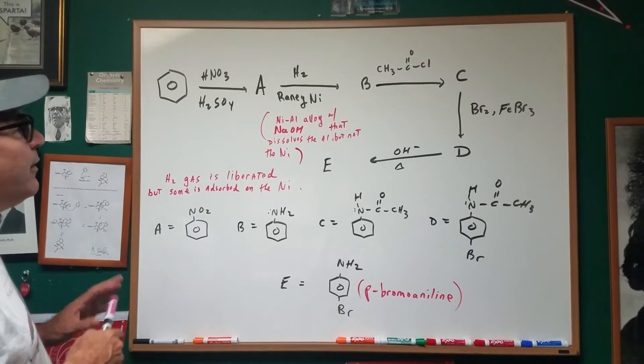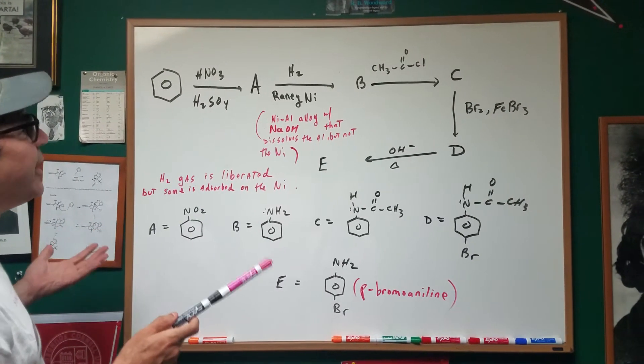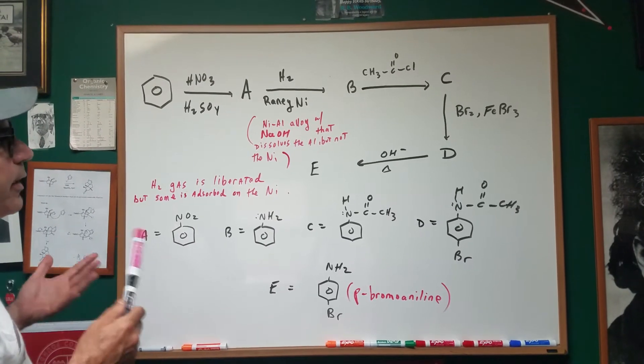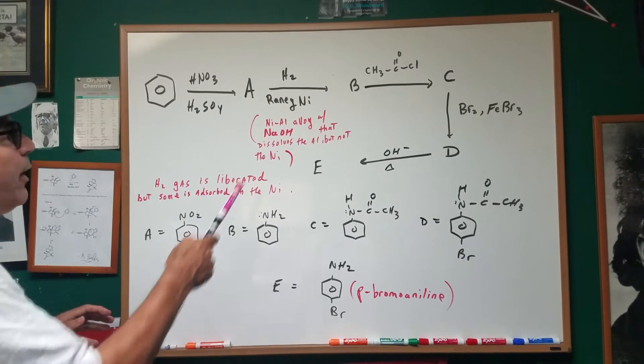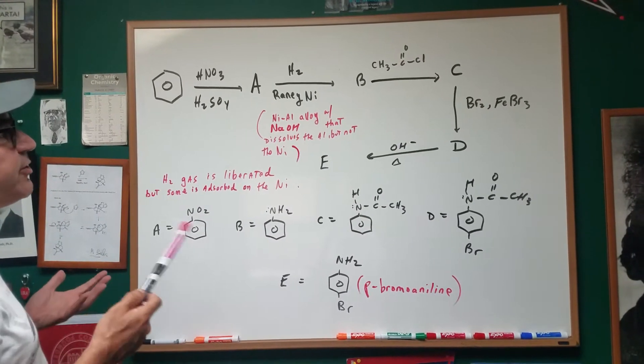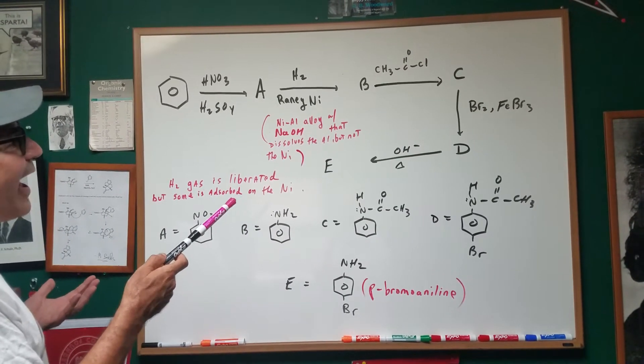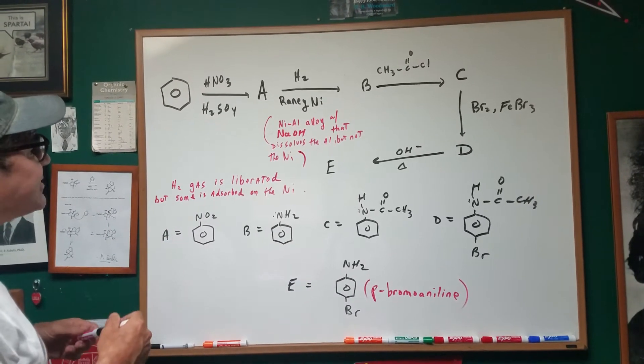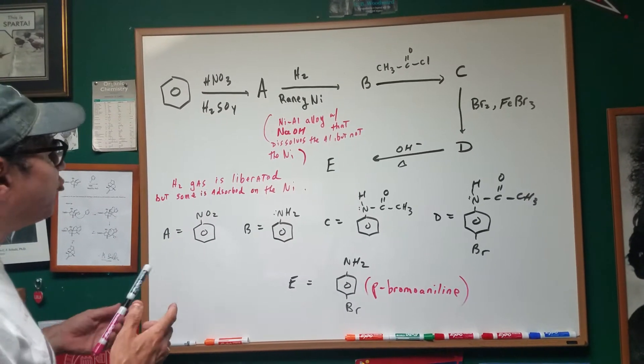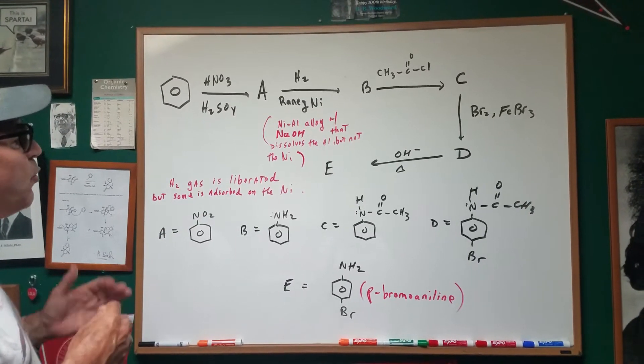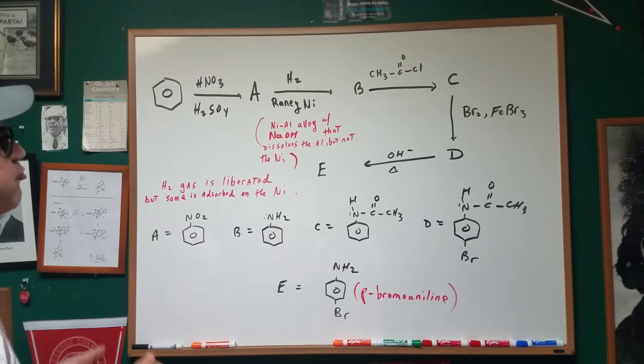Now, before we start, what the hell is rainy nickel? Nickel aluminum alloy that we actually have, we can treat it with sodium hydroxide. This will dissolve the aluminum, but not the nickel. And you would see this in lab, hydrogen gas is liberated, but some of the hydrogen gas will be absorbed on the nickel surface. We call this rainy nickel.